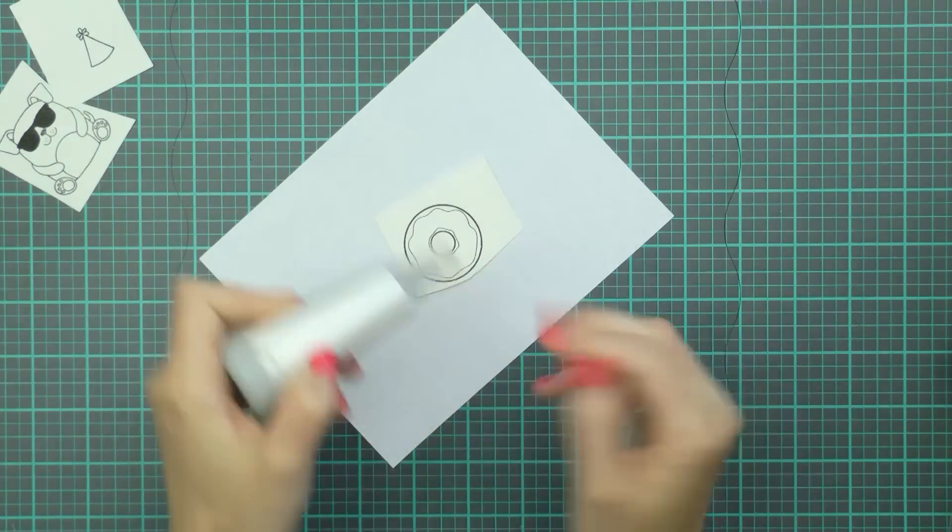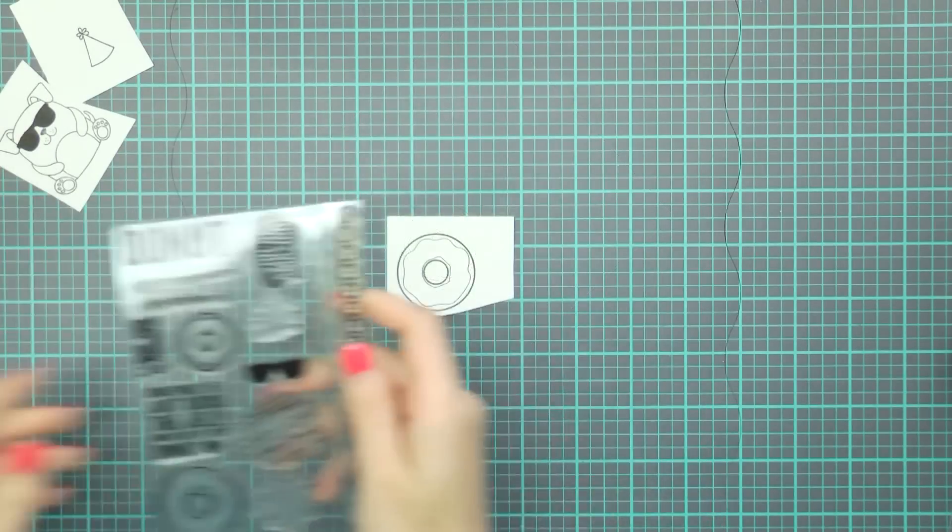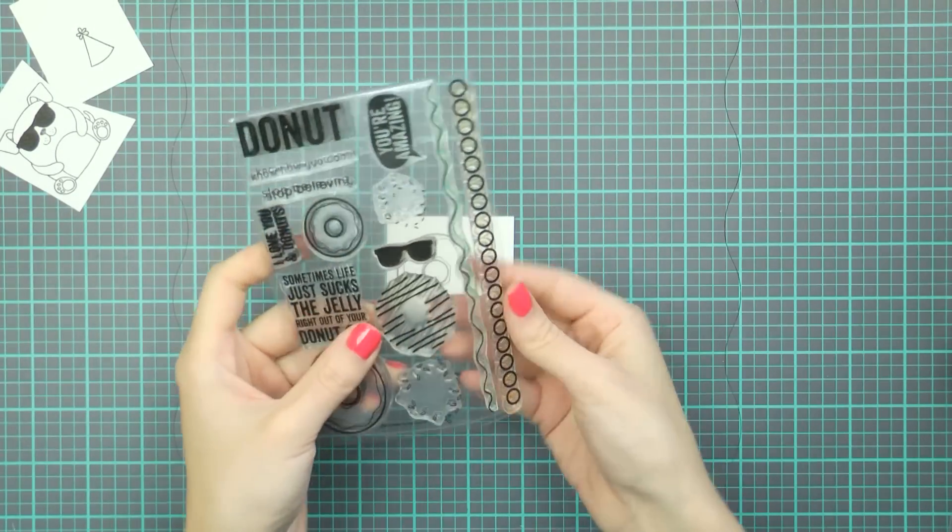But for heat embossing it's always best to zap the stamped image with a heat tool to make sure the ink is completely dry.